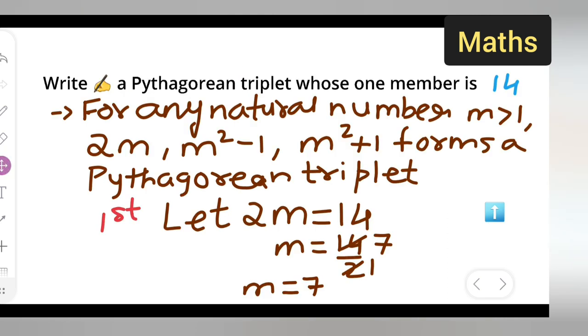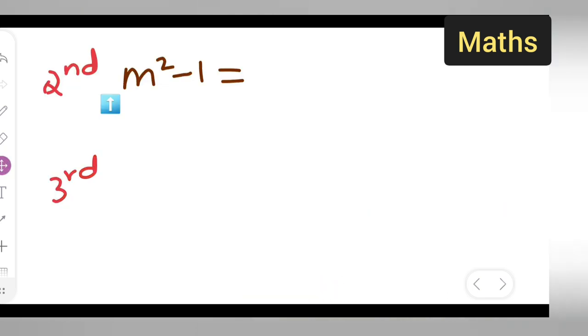7² - 1, you will get 7 × 7 = 49. 7² is 49 minus 1, your answer will be 48. Your answer will be 48.